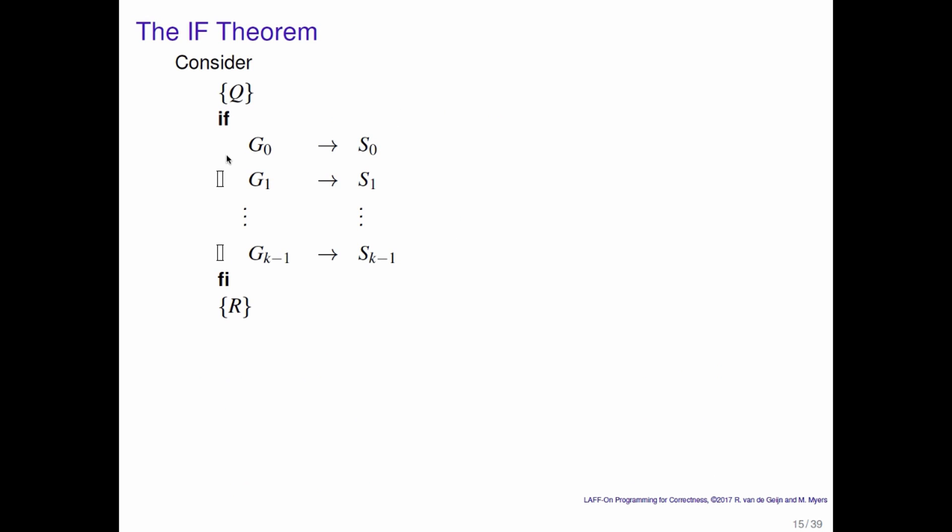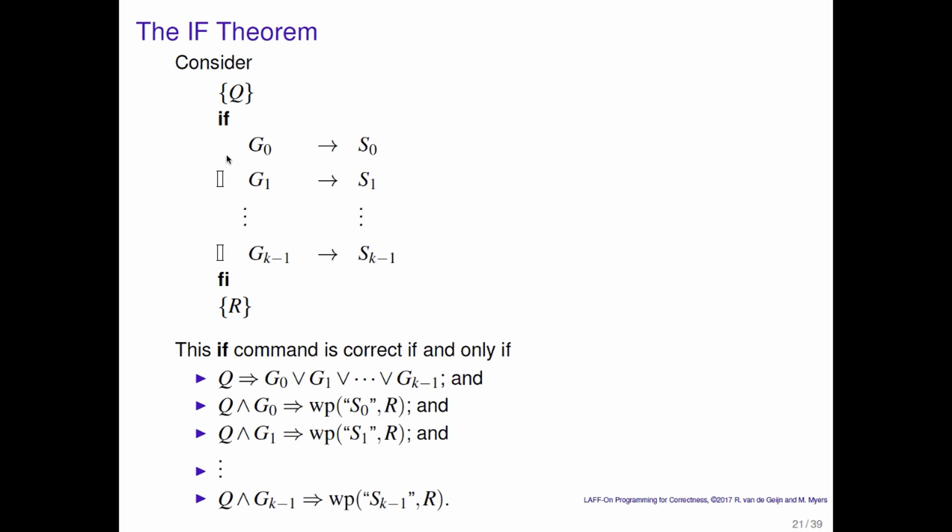What does that mean? Well, it justifies what we call the if theorem. Consider here again our prototypical if command. This if command is correct if and only if Q implies that one of the guards is true. And for each of the guarded commands, Q and the guard for that command implies the weakest precondition of that command, leaving you in a state where R holds. And that's known as the if theorem.